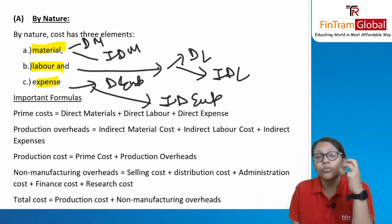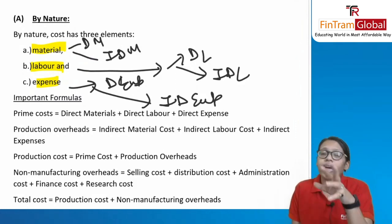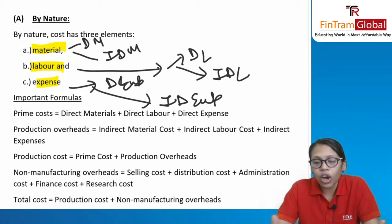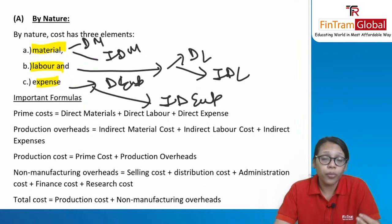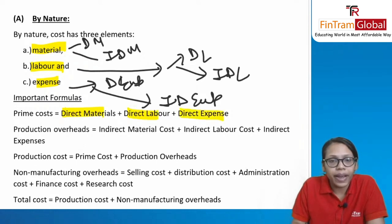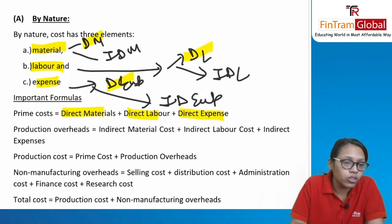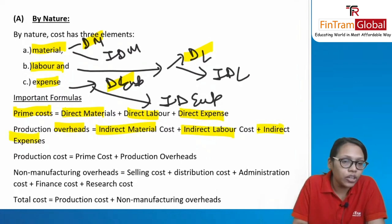Direct expenses are those involved in the production activity and change in the same proportion as production. Indirect expenses do not change with the level of production activity — for example, rent: whether you produce 2,000 units or zero units, if rent is $200, it stays $200. Prime cost is direct material plus direct labor plus direct expenses, and overhead is indirect material plus indirect labor plus indirect expenses.